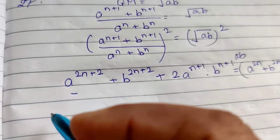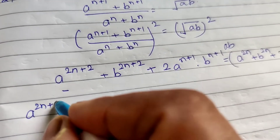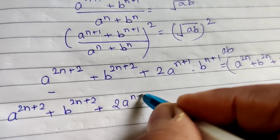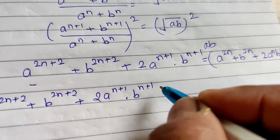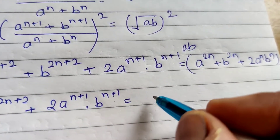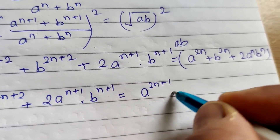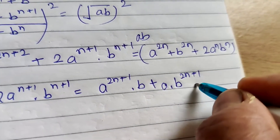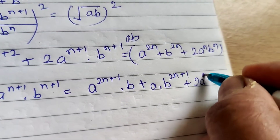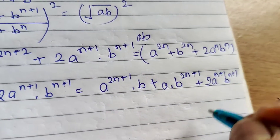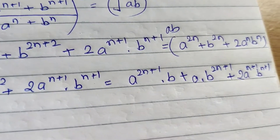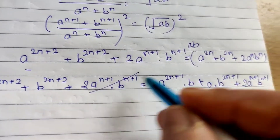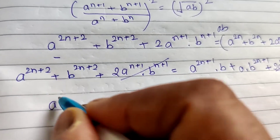Multiplying out, we get a^(2n+2) + b^(2n+2) + 2·a^(n+1)·b^(n+1) on one side and a^(2n+2) + b^(2n+2) + 2·a^(n+1)·b^(n+1) on the other. The 2·a^(n+1)·b^(n+1) terms on both sides cancel out, and we rearrange the remaining terms.